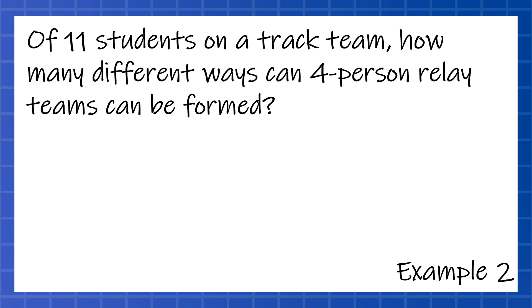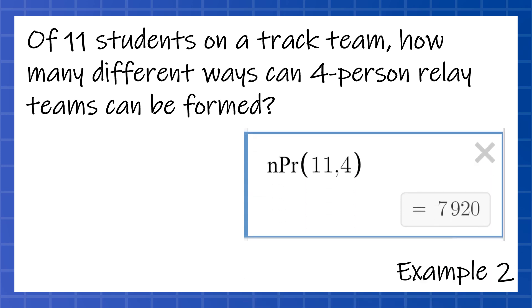And if you've ever done track and field, there's somebody that might be the best person to start a race, and it might matter who finishes the race. So I'm treating this as a permutation, because if I change the same four people and put them in a different order, I'm treating that like it's a whole different team. So when I type that in, I get NPR 11, four, and my answer is 7,920 different ways.